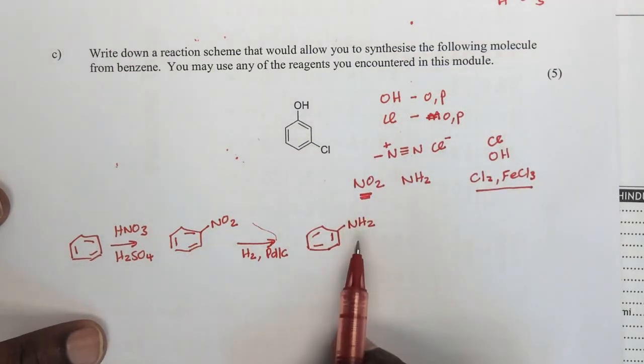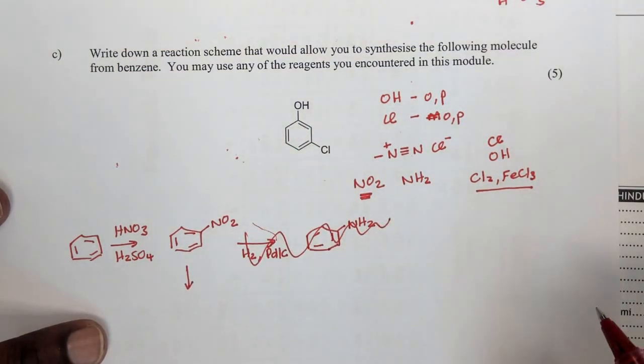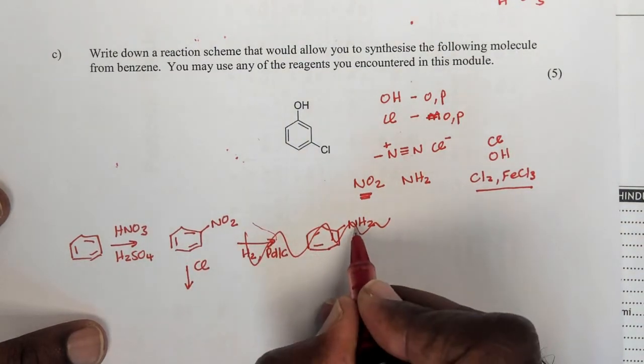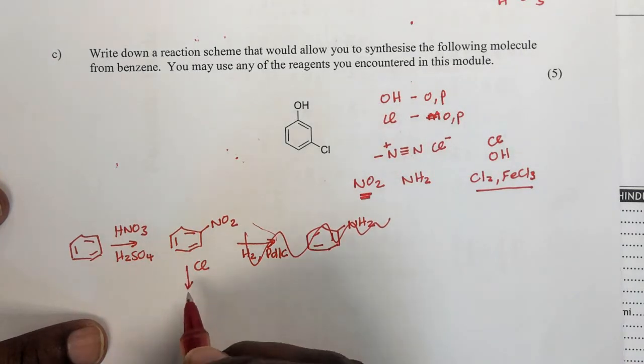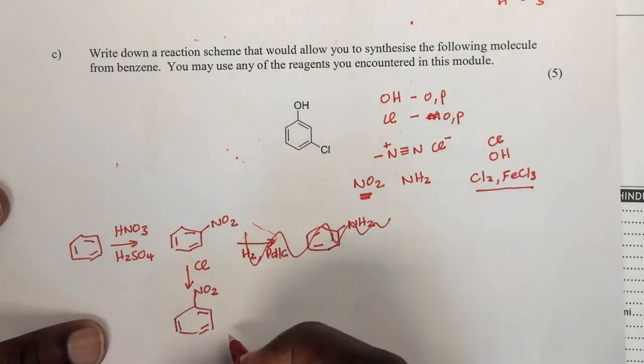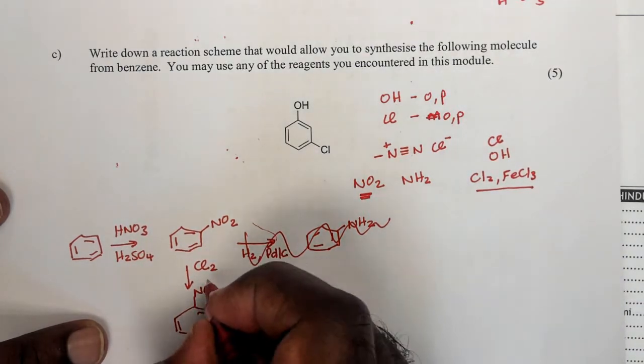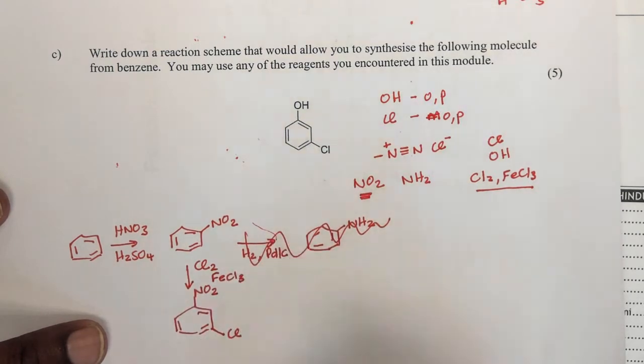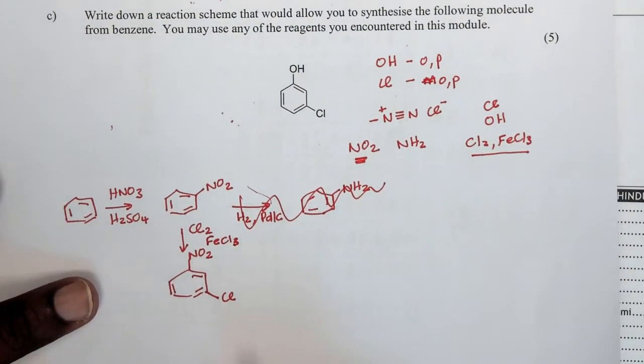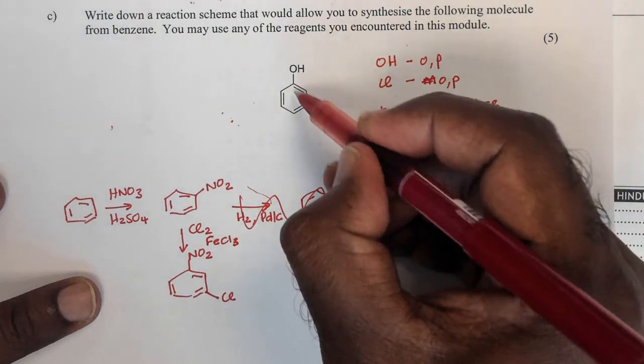But if I do this, then I can't now put the chlorine group on. So, before I carry out this reduction, I would need to put on the chlorine group first. Remember that NH2 is an ortho-para director, so I can't go this route. So, I have to now chlorinate first. And I can do this because this nitro group is a meta-director. I do that with Cl2 and FeCl3, and I can chlorinate the meta position. And only once I chlorinate the meta position, I've got the groups where I want it at meta position.